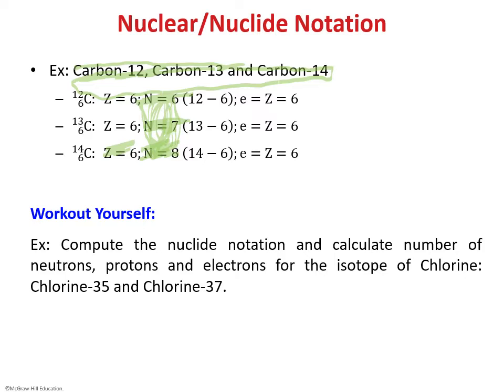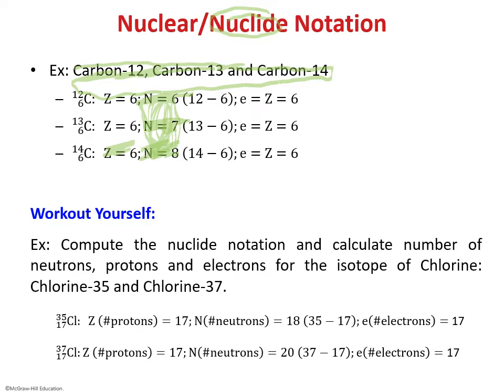Here is a practice problem: compute the nuclide notation and calculate the number of neutrons, protons, and electrons for the isotopes of chlorine — chlorine-35 and chlorine-37. The mass number is given, so to find the atomic number, look up chlorine in the periodic table — the atomic number does not change between isotopes, only the mass number does. Pause the video, compute these numbers, then continue to the next slide for the answers.